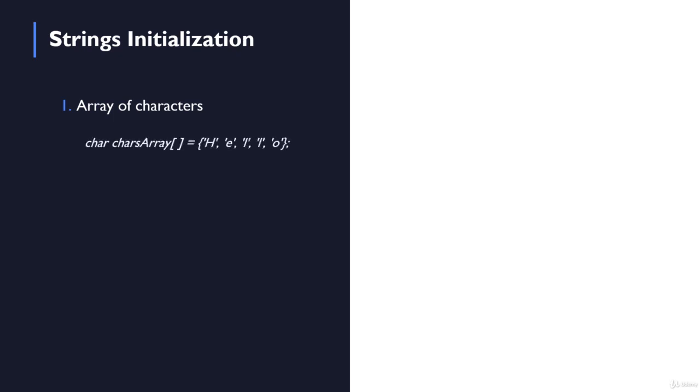We know how we can initialize an array of characters. We just specify the type of the array, the name, square brackets, and then in curly brackets we specify each of the elements, each of the characters in this given array. This array is called charArray, and that's not a string, that's just an array of characters with five elements starting from index 0 up to index 4.